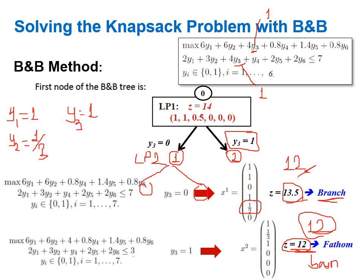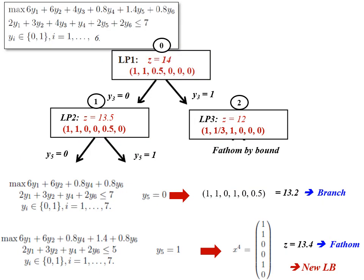If we had not used the rounding trick and kept the lower bound at minus infinity, we would not have been able to fathom this branch. This illustrates the benefit of finding an initial integer feasible solution — it allowed us to fathom node two. To summarize: from the root we found an upper bound of 14 and an incumbent of 12, branched on y3, explored the y3=0 branch as node one obtaining objective 13.5, then explored the y3=1 branch as node two and fathomed it.